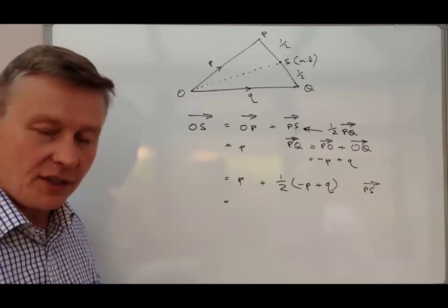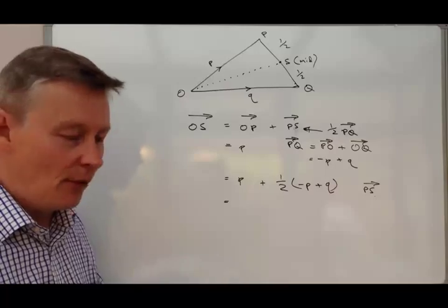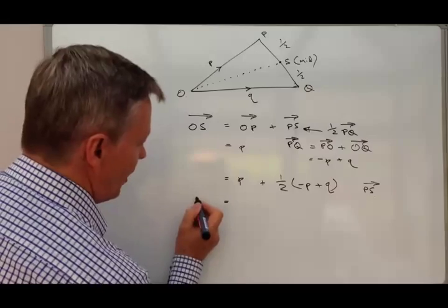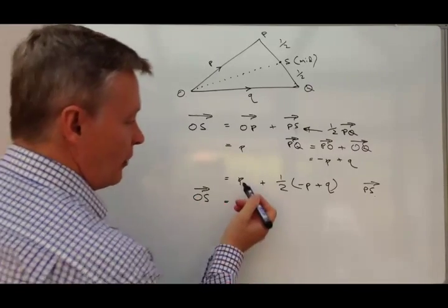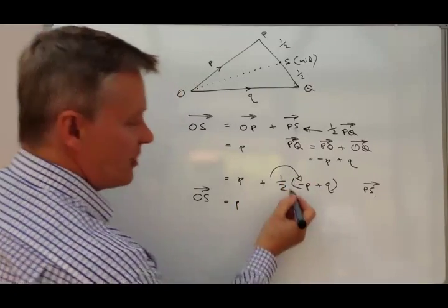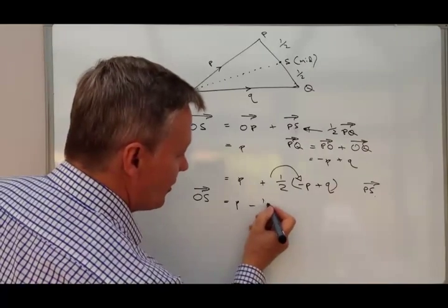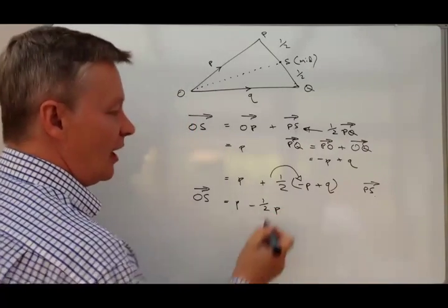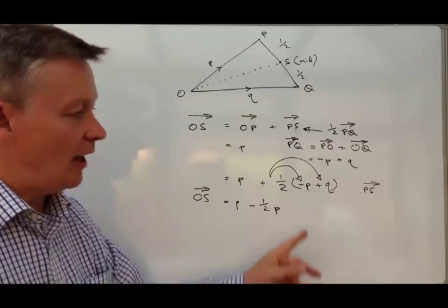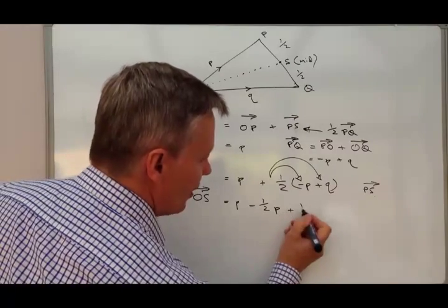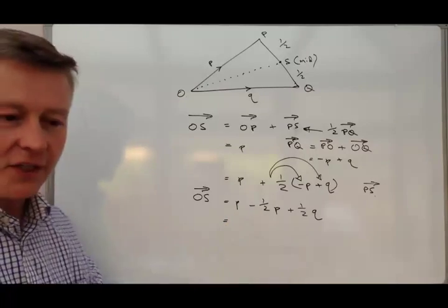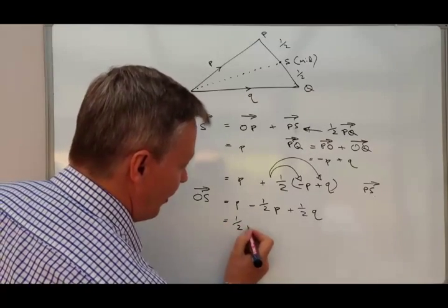These types of questions usually tend to be three, maybe four marks, and the final mark is reserved for this final tidy up. So vector OS is going to be P minus a half P plus a half Q. That's going to be a half P plus a half Q, and that would answer this particular question.